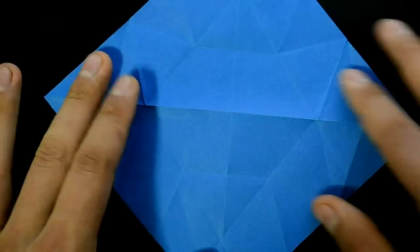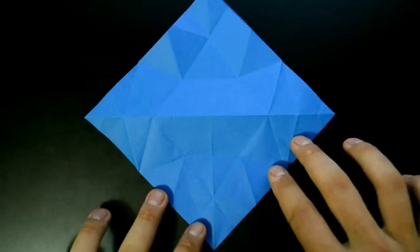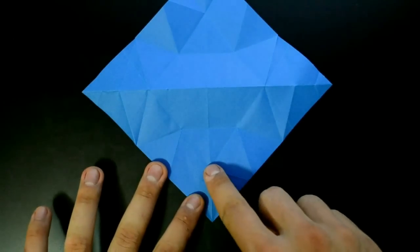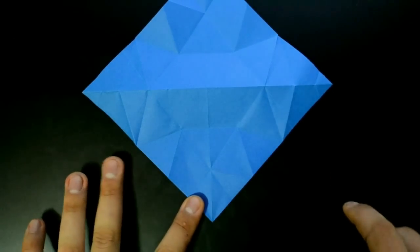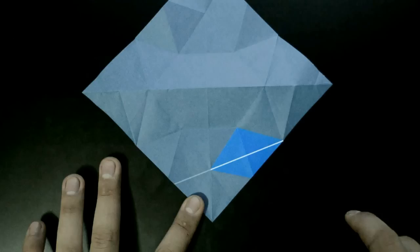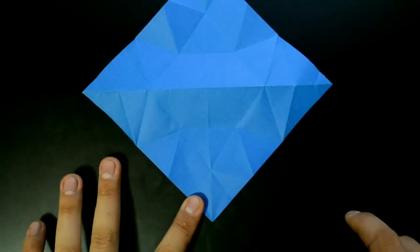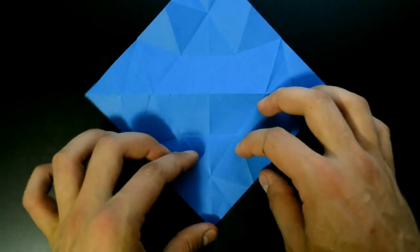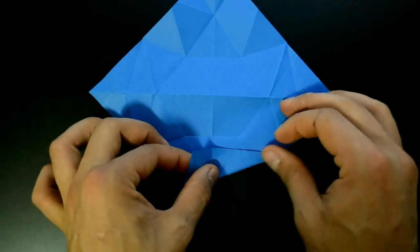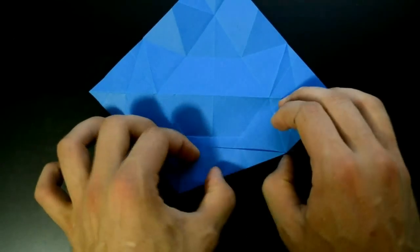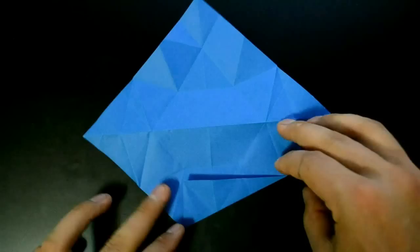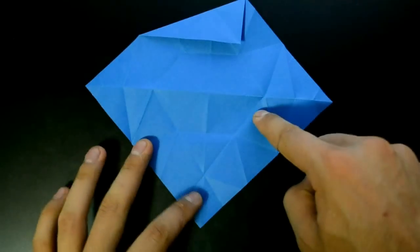And we need to create a new diagonal connecting now these two points here. Just watch and repeat. Again, fold strongly. Rotate. Repeat the same here.